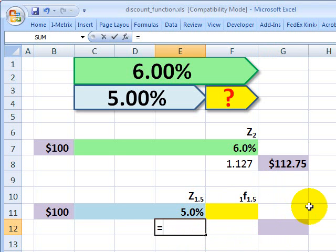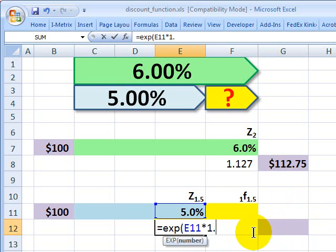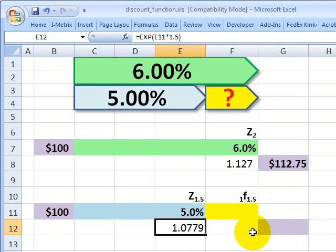Now I'm going to do a similar thing. I'm going to continuously compound at the 5%, but that's not over two years. That's over one and a half years. That gets me the multiplier.